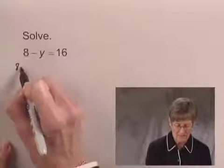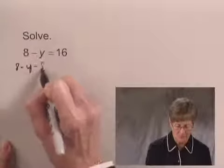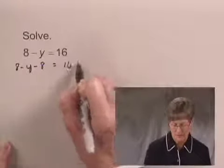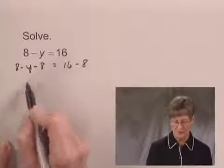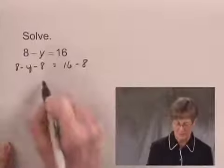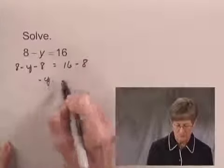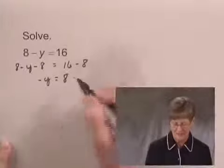So we would have 8 minus y minus 8 equals 16 minus 8. Now 8 minus 8 is 0, so on the left-hand side I have 0 minus y, or just the opposite of y. 16 minus 8 is 8.